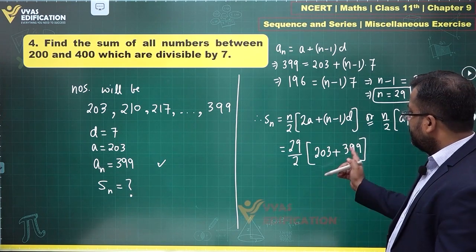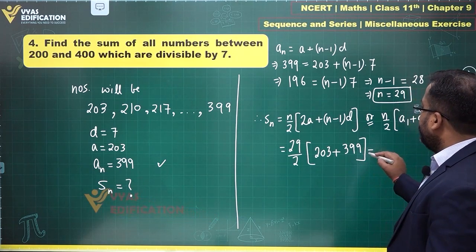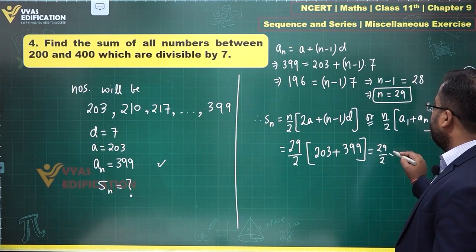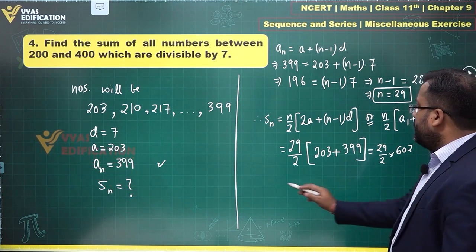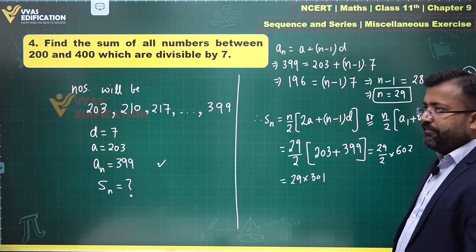This is 602. So we have 29 by 2 into 602, which is 29 into 301.